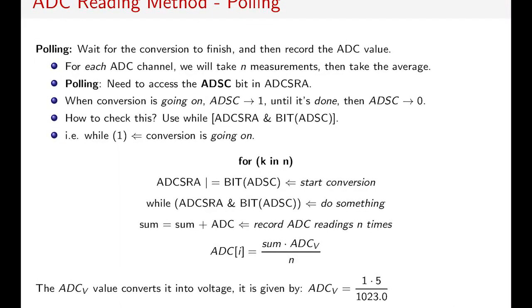Here we have: while (ADCSRA & BIT(ADSC)). So we just check it that way. While that's true, conversion will be going on. The loop is very easy. While the conversion is going on, just do something. When it's done, you add the value to the sum, and then you divide sum by the number of attempts. Lastly, you multiply it by this constant, which is 1.5 / 1023.0, and that just converts it to a voltage.